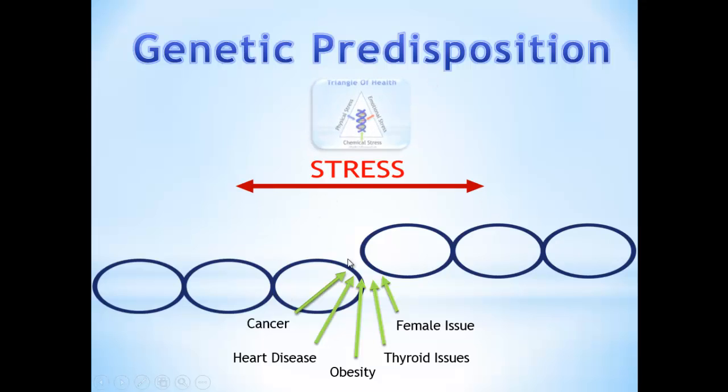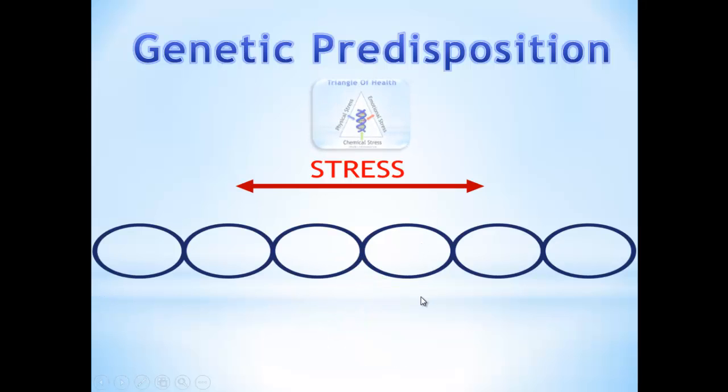The key thing is we have the ability to take the stress off the chain. If you're pulling that chain tight, there's no amount of drugs that can take the pressure off the chain. We actually have to go back and deal with the triangle of health here to actually pull the stress off.